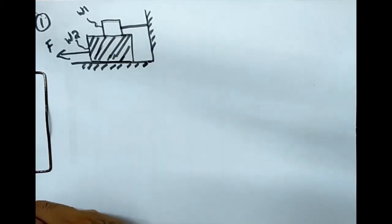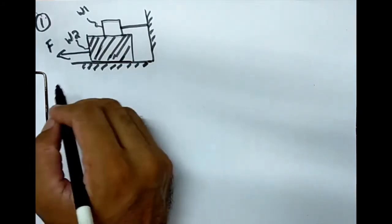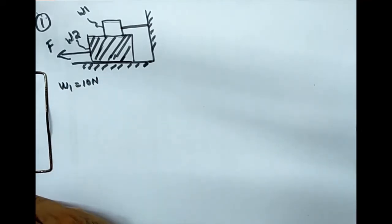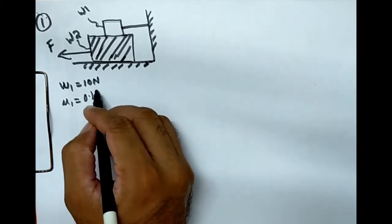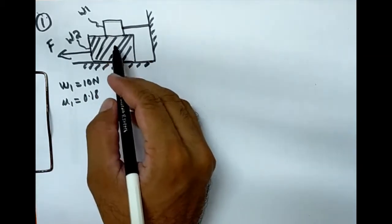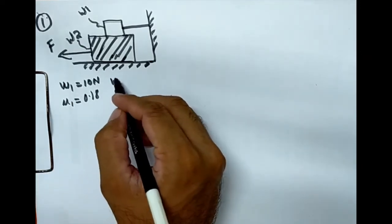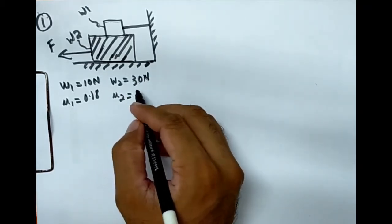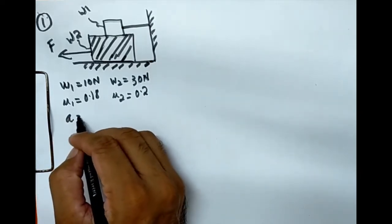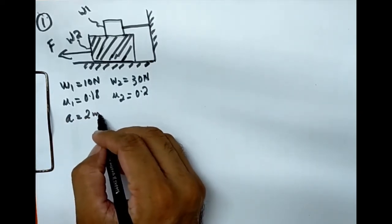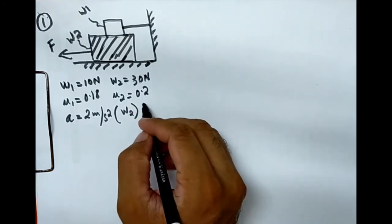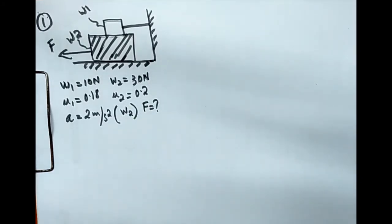The given data is: w1 is equal to 10 Newton, mu1 (friction between w1 and w2) is 0.18, w2 is equal to 30 Newton, mu2 is equal to 0.2, and the acceleration is 2 meters per second squared. We are asked to calculate the force F needed so that object w2 moves with that acceleration.